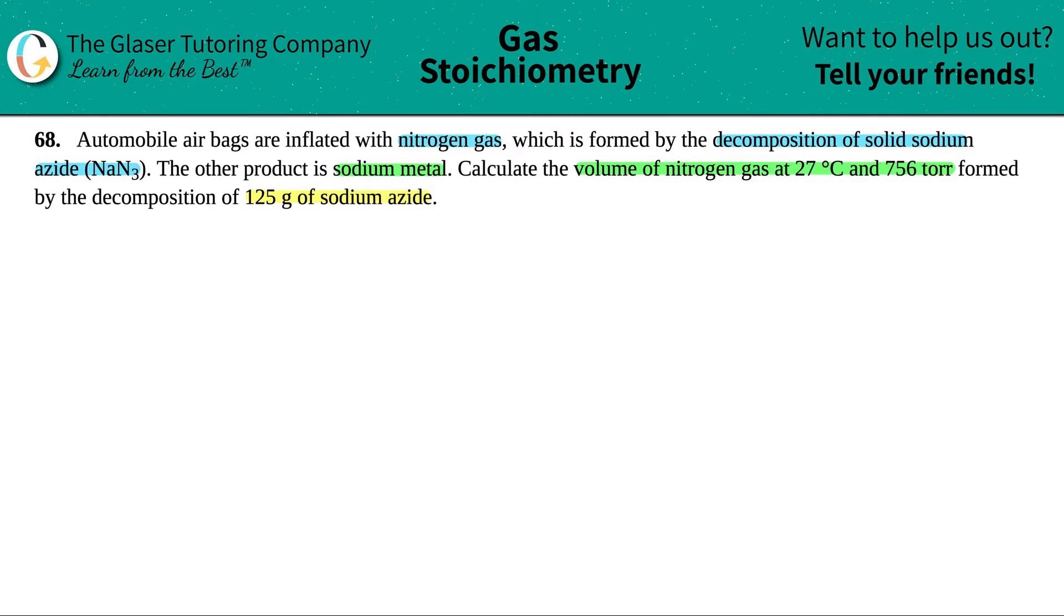First things first, we're trying to find a volume of one thing, nitrogen gas, and they're giving us information about another compound, sodium azide, which is NaN3. When they're asking you for a question of one thing and they give you information for another, chances are you're going to have to write a balanced equation.